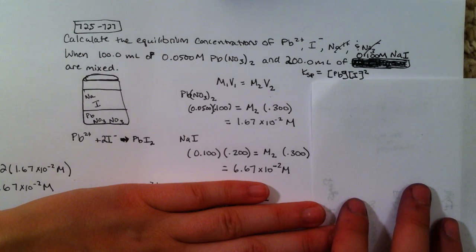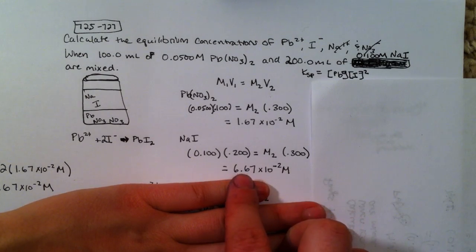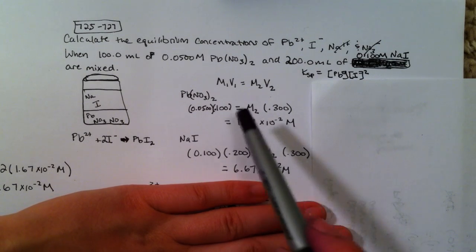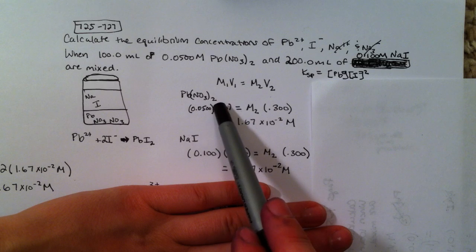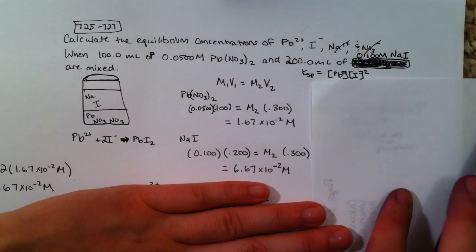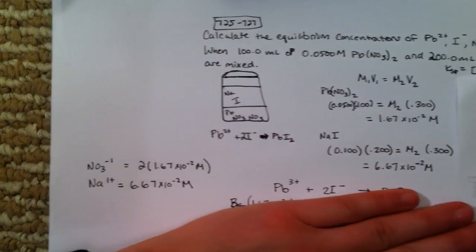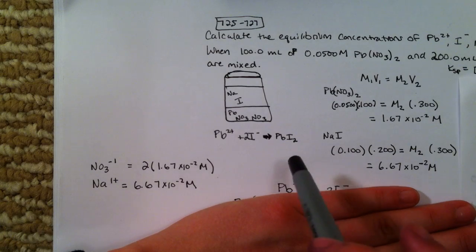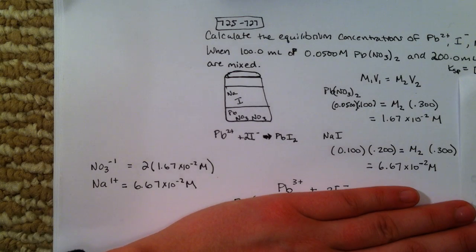We can use these ones already to get the sodium and the nitrate out of the way. Since there's one sodium, the concentration of sodium is going to equal this new diluted concentration because the sodium is just a spectator. And we know that there's two nitrates here, so the concentration of the nitrate is two times as much. I wrote those over to the side where I'm kind of keeping track of my substances. Once they're diluted, that's what they're going to be.